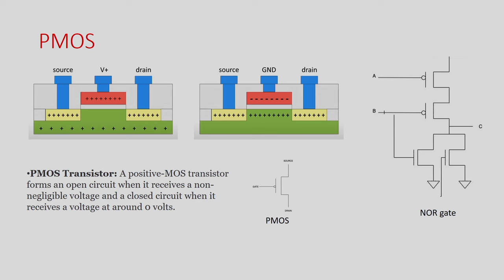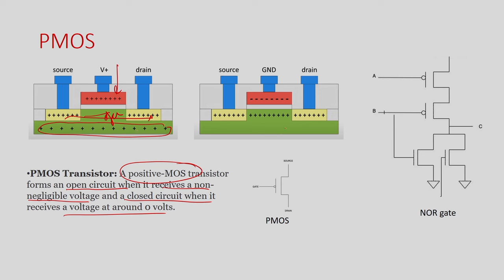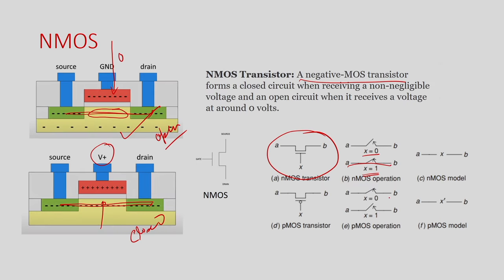In PMOS, it is just the opposite — it is a positive MOS transistor. It forms an open circuit when it receives a non-negligible voltage, that is positive 1, and closed when it receives a 0 voltage. In PMOS, the base has positive charges. If you give positive charges here, it will deflect and the connection between source and drain becomes open. Whenever you give a negative charge, the positive charges are attracted and it becomes a conductor — it is closed. So whenever you give 0, it is closed; whenever it is 1, it is open. In NMOS, whenever you give 0 it is open, and when you give 1 it is closed.